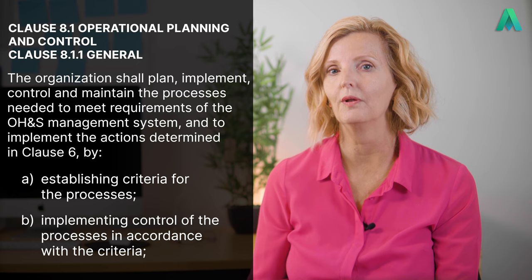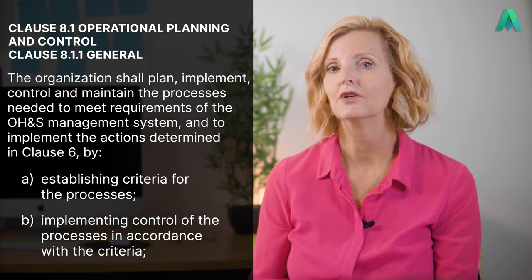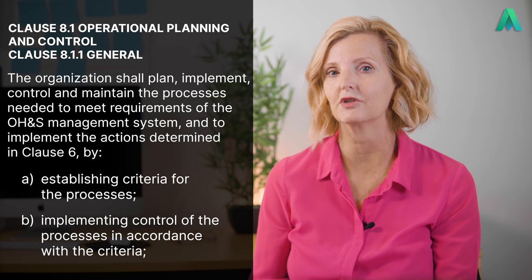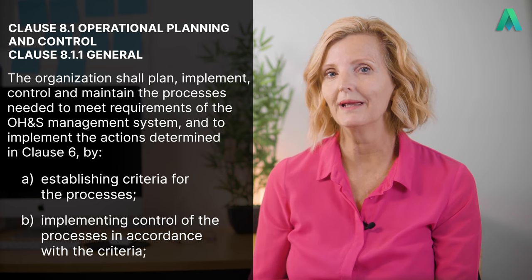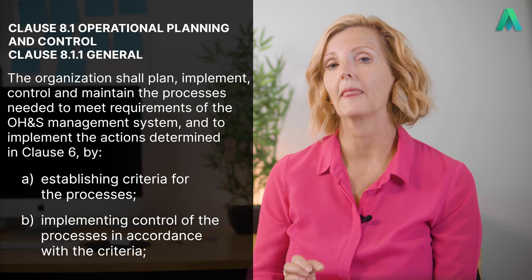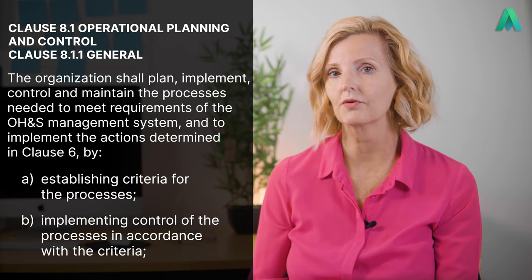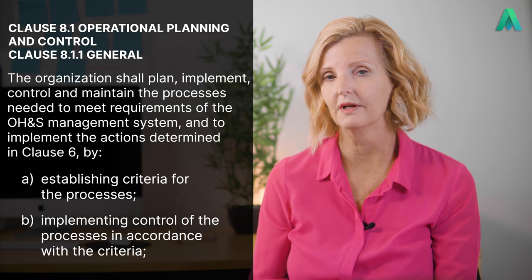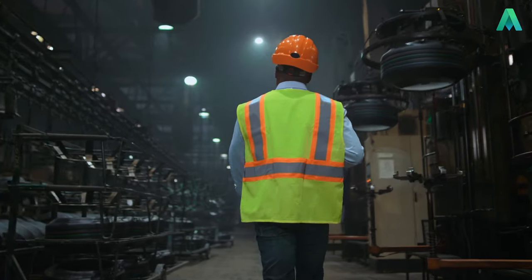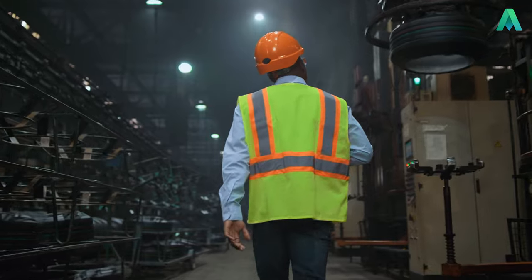Let's take a look at what Clause 8.1 wants us to do. The clause states that the organisation shall plan, implement, control and maintain the processes needed to meet requirements of the OH&S management system, and to implement the actions determined in Clause 6 by: a) establishing criteria for the processes; b) implementing control of the processes in accordance with the criteria. This means that the organisation needs to define how the processes will be carried out, and the requirements that need to be met to ensure conformance with OH&S requirements.